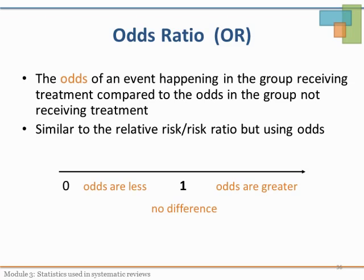The other way to measure a difference is using the odds ratio. It is very similar to a relative risk, except it measures the odds of an event happening. Same as a relative risk or risk ratio, it varies from 0 to infinity, and again, if the odds ratio is 1, the odds are similar between the groups.